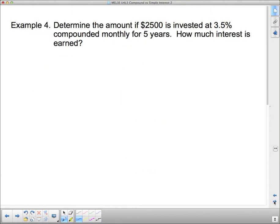Carrying on. Determine the amount if $2,500 is invested at 3.5% compounded monthly. Now, how is this different than the last one? We've still got $2,500 at 3.5% in five years. How is this any different than the one we just did? Well, it's all in this word here, monthly. Monthly means that we're going to do it 12 times a year.